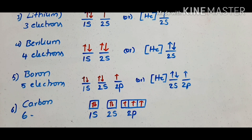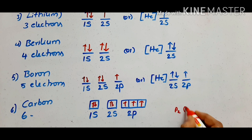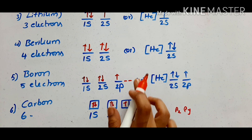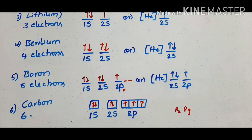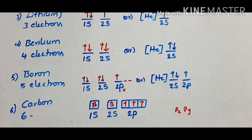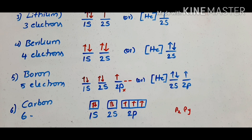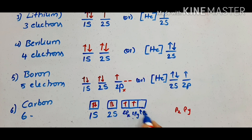The p orbital can accommodate up to 6 electrons. For boron, the 5th electron enters 2p with an upward spin. For carbon with 6 electrons, the configuration includes 2p². The two 2p electrons occupy separate orbitals — px and py — with parallel spins, following Hund's Rule.